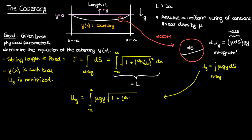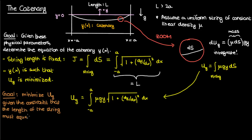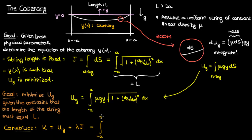Here's what we get for the total gravitational potential energy of the string. This gravitational potential energy depends on the function y describing the shape of the string, so UG is a functional which depends on y of x. Because the string wants to minimize its potential energy, the goal is to minimize UG subject to the constraint that the length of the string equals a fixed constant L. This is a constrained variation problem. We construct a new functional K that equals UG plus a Lagrange multiplier lambda times the constraint functional J. Plugging in the integral expressions for UG and J gives us the integral for capital K.